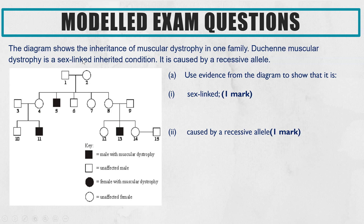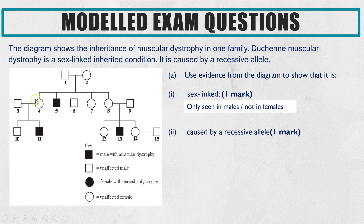One key thing to remember: if a condition is sex-linked and caused by a recessive allele, it will mainly be males who have the condition, because they only get one X chromosome and are XY. For a male to have the condition, they only need one recessive allele. Whereas females, because they are XX, require two recessive alleles. So the evidence that it is sex-linked is that only males have the condition, or you don't see it in females. And we know it's recessive because we can see the pattern of parents who do not have the condition but have a child who does.